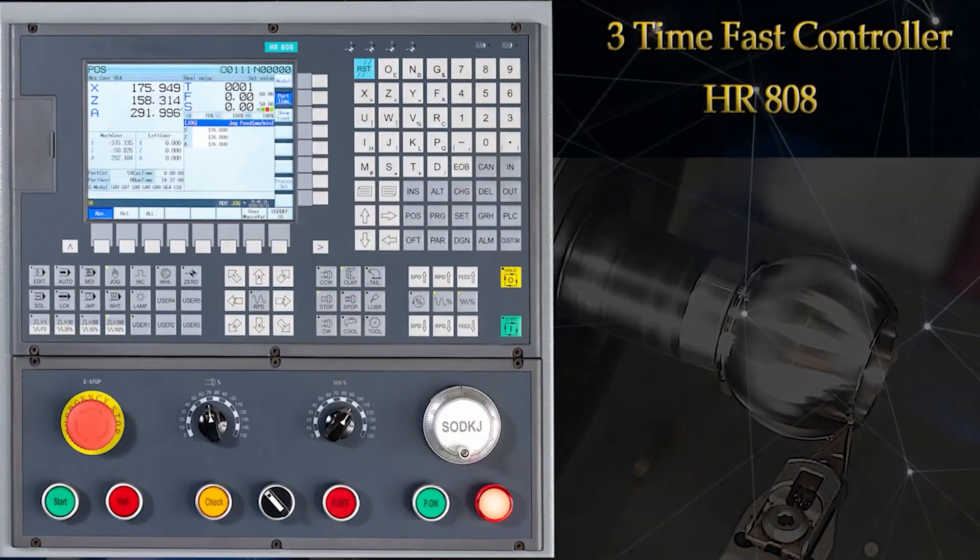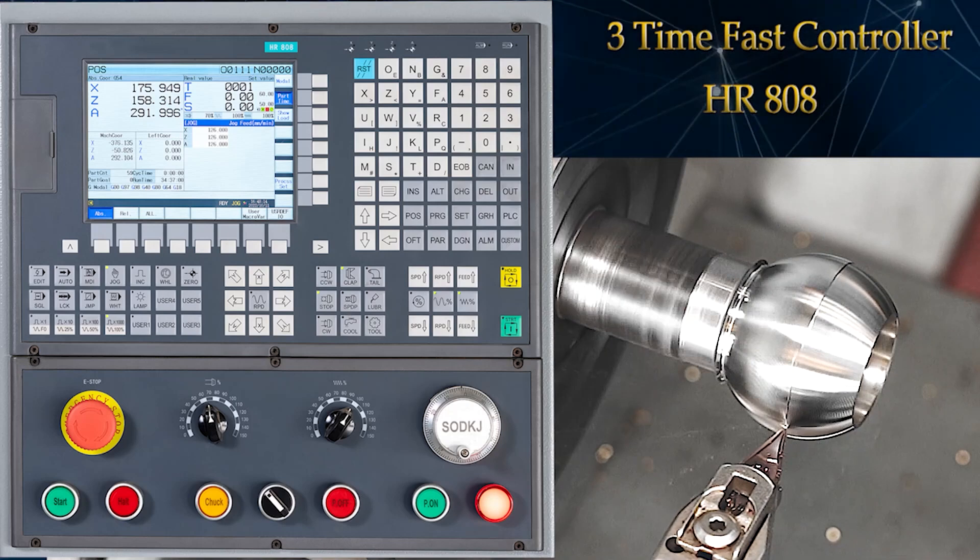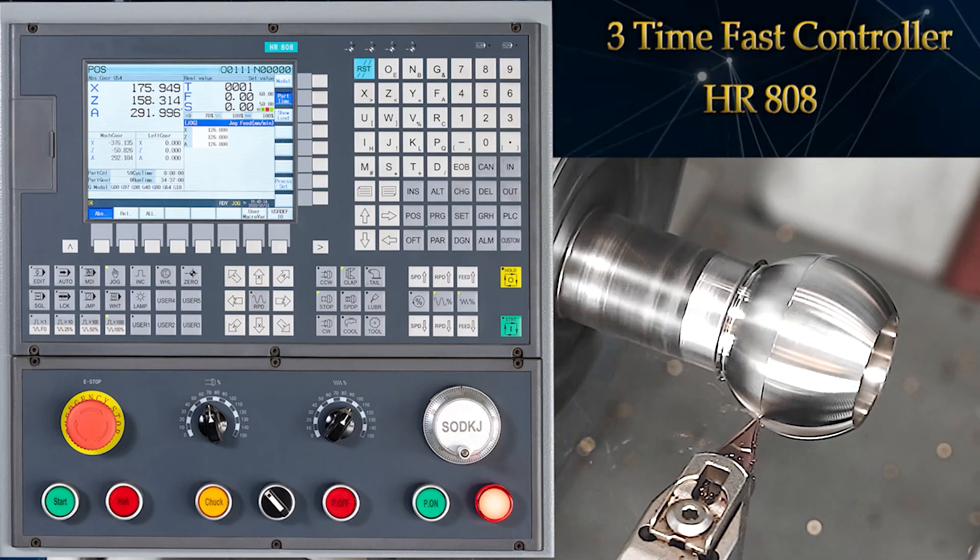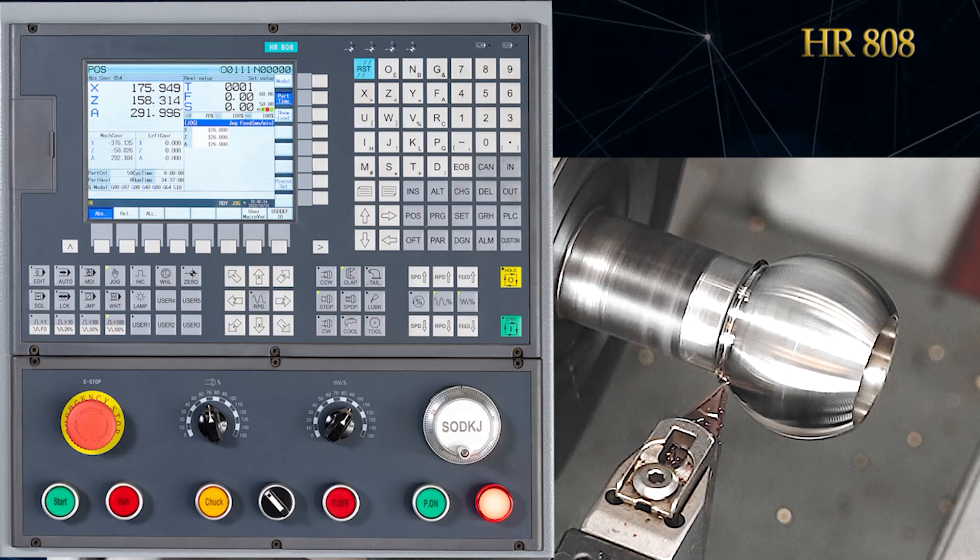Three-time fast controller HR-808 provides good job finishing. While changing the radius or angle, the controller calculates the value of X and Z, resulting in good job finishing in X and Z axes.